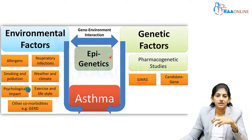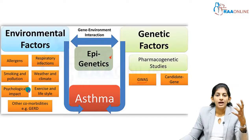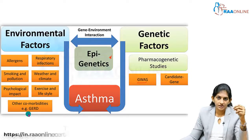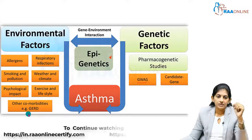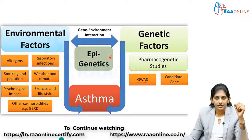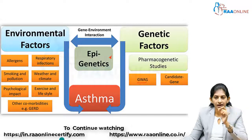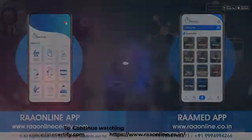Some lifestyle factors — psychological stress, menstruation, pregnancy — can also impact and exacerbate asthma. There are many other comorbidities which we will deal with later. Just understand that asthma is a combination of both environmental and genetic factors.